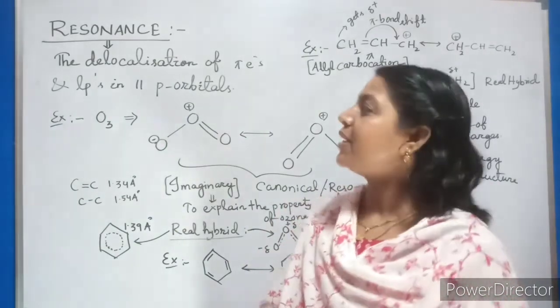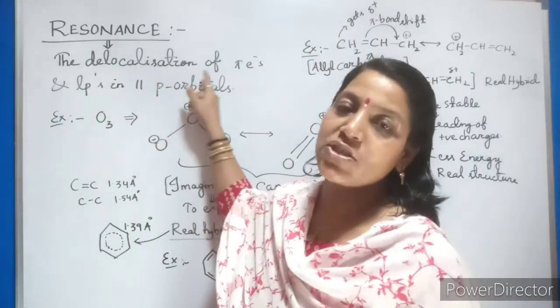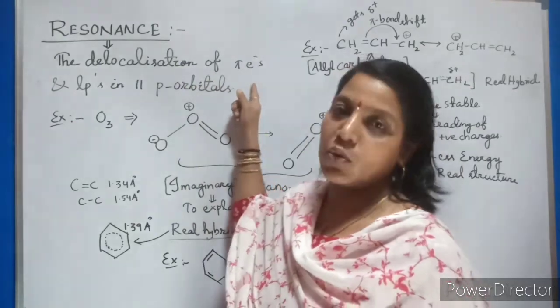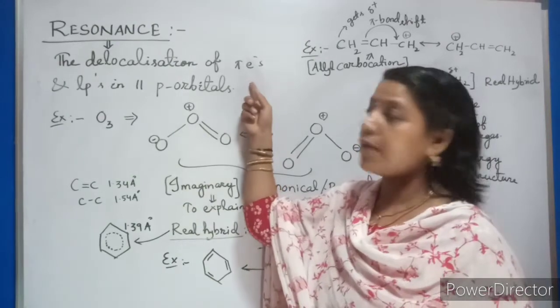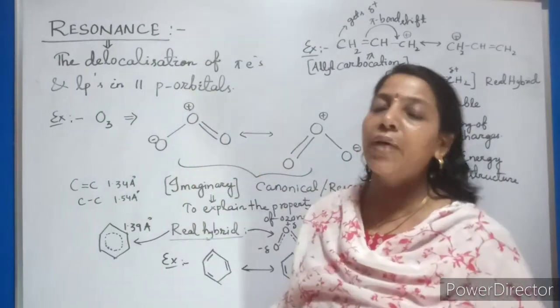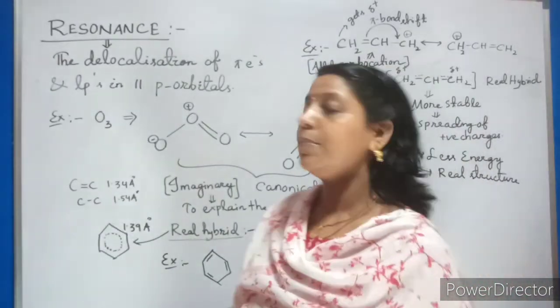Resonance is nothing but the delocalization of the pi electrons. You know your bond, sigma bond, pi bond. So your pi bond electrons and the lone pair electrons in parallel p orbitals.